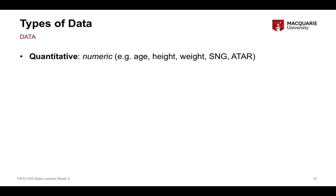Next, let's talk about types of data. Different types of data represent what kind of information they're storing. The first thing to think about is whether it's numeric or descriptive information. Numeric information, also called quantitative data, is something with an inherently numeric property — measured on a numeric scale. For example, age in years, height in centimetres, weight in kilograms, your GPA, your ATAR — anything with that numeric property is called a quantitative variable or quantitative data.